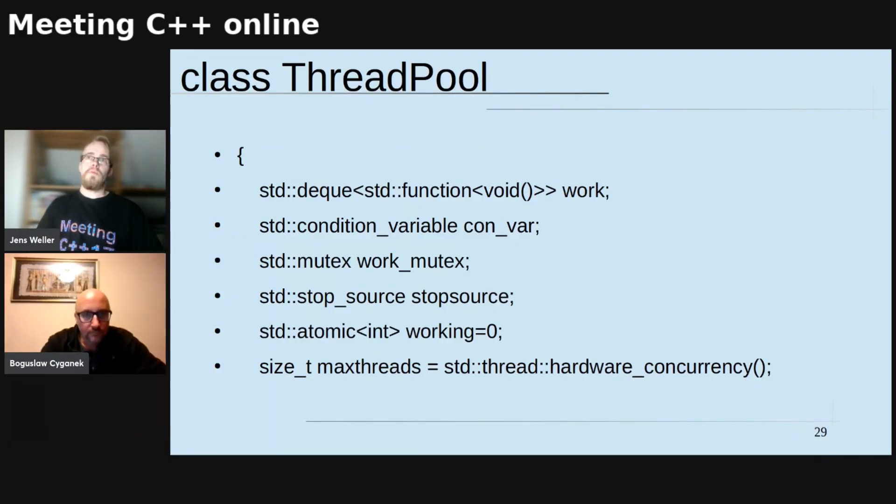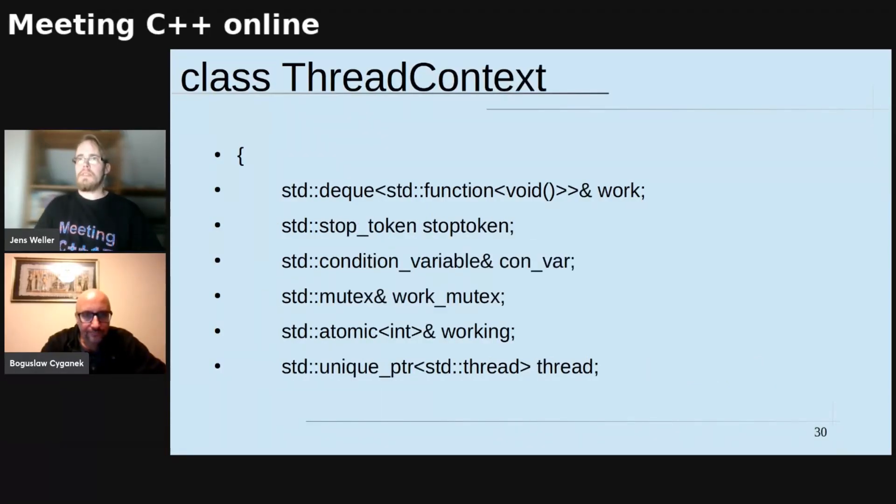Here we have the completed class, class thread pool, one thing is missing, and that is it has a subclass, which is the class thread context, which has also a reference to the work deque, a stop token which it gets from the thread pool, and then various references to the condition variables, mutexes, etc., what it's working with.